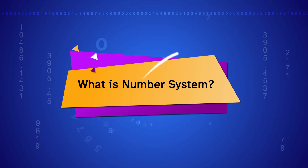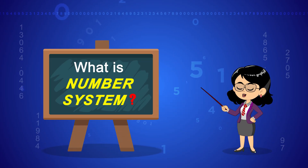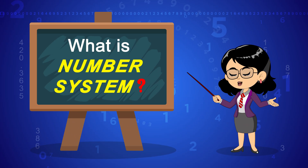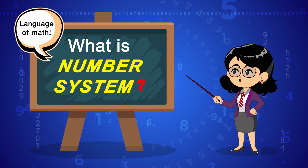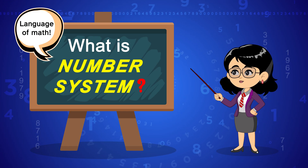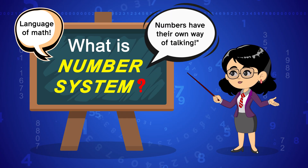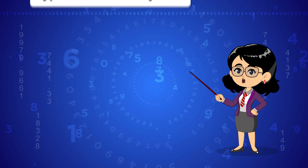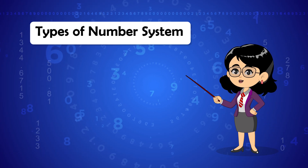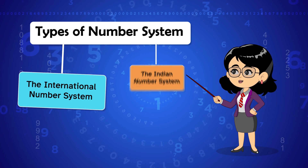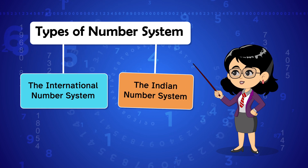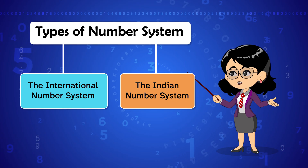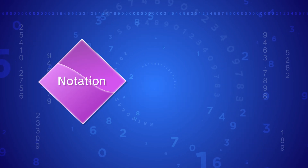What is a number system? A number system is a way to write and understand numbers. It's like the language of math — just like we speak English or any language, numbers have their own way of talking. There are two types of number systems: the International Number System and the Indian Number System. Before we go ahead, let's understand two important words: notation and numeration.